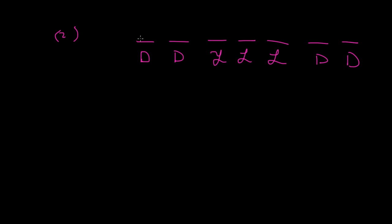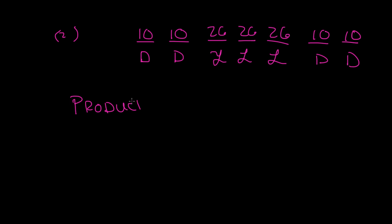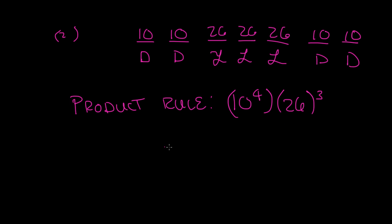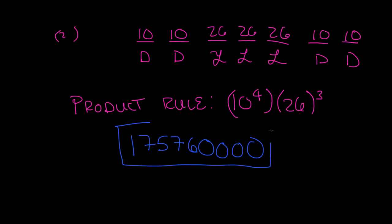In base 10 we have digits 0 through 9, giving 10 choices for each digit position. There are 26 letters in the standard English alphabet. By the product rule we multiply: 10 × 10 × 26 × 26 × 26 × 10 × 10, which simplifies to 10⁴ × 26³. The final answer is 175,760,000 possible license plate combinations.